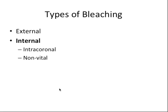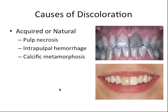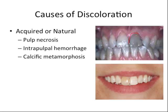I hinted before that it's not sufficient to bleach a dead tooth from the outside because of the nature of the discoloration. Let's talk about several causes of tooth discoloration and whether they should be bleached internally or externally. We'll start with acquired or natural causes, the first and most common of which is pulp necrosis. This is due to bacterial, mechanical, or chemical irritation of the pulp tissue; disintegration byproducts can permeate the dentinal tubules from inside the tooth, so this tooth should be bleached internally for the best result.